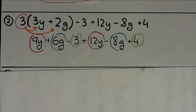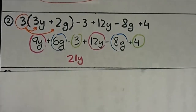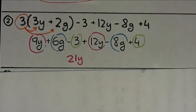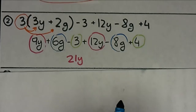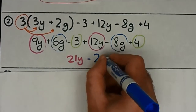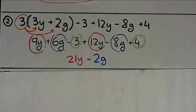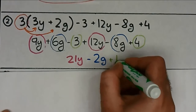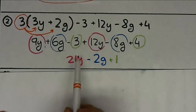Now you simply combine your like terms. 9y plus 12y gets us 21y. Then the g terms: 6g minus 8g — don't forget this negative belongs to the g term — so 6g minus 8g is negative 2g. And last but not least, negative 3 plus 4 — this minus belongs to this 3, so don't forget about it — and negative 3 plus 4 is just 1, and that just happens to be your answer. Questions on 2?